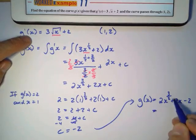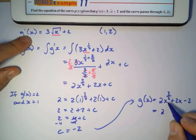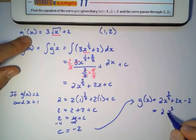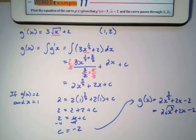Please note that this is the same as if I write that in surd form. It will be 2x cubed square root, that's what the square root means, plus 2x minus 2. That's exactly the same answer.